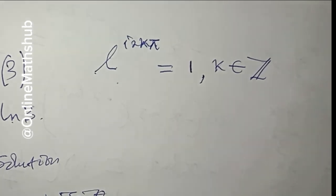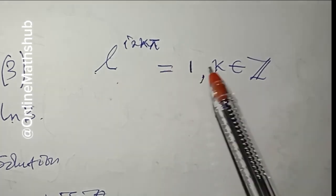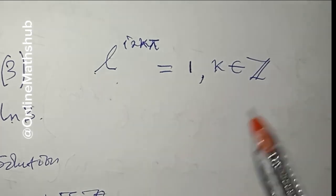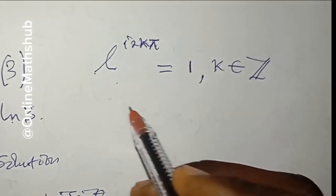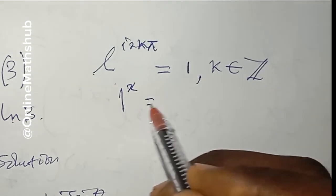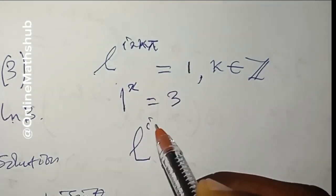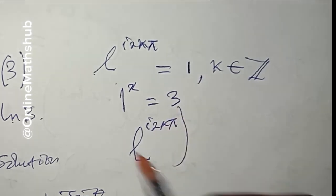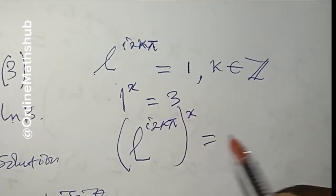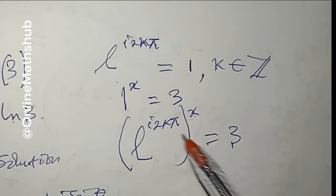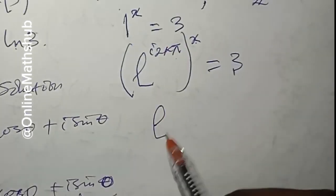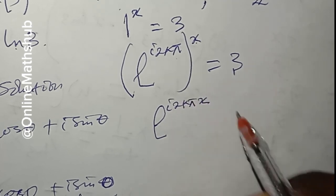In order to solve the problem, we make this substitution: in place of 1 we write e^(i·2kπ). That tells us that 1^x = 3 now becomes (e^(i·2kπ))^x = 3. We can then multiply the exponent by x, giving us e^(i·2kπx) = 3.